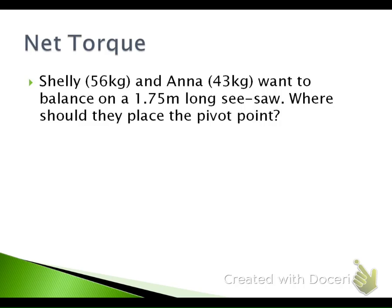Let's try one net torque problem together. Shelly weighs 56 kilograms and Anna weighs 43 kilograms. They want to balance on a seesaw that is 1.75 meters long. Where should they place the pivot point in order to be completely balanced? Because they don't weigh the same, they can't place the pivot in the middle — otherwise it would lean one way. We need to figure out where the pivot point needs to be placed: how far each person sits from that pivot.